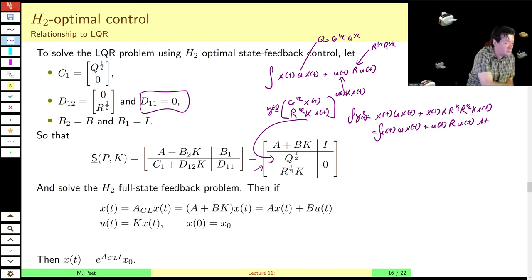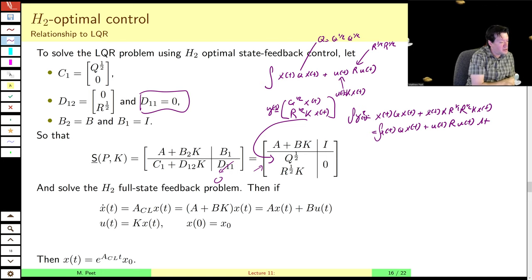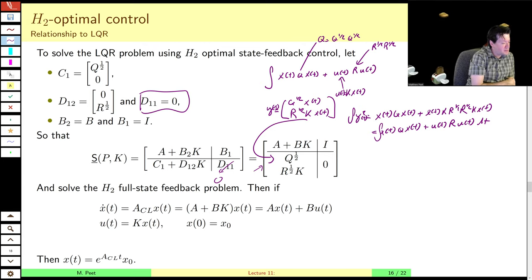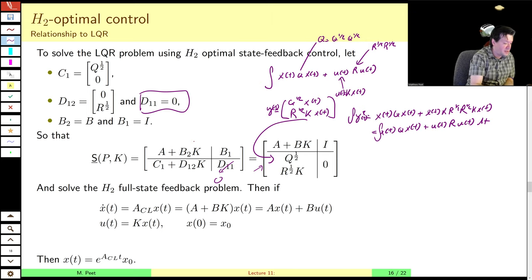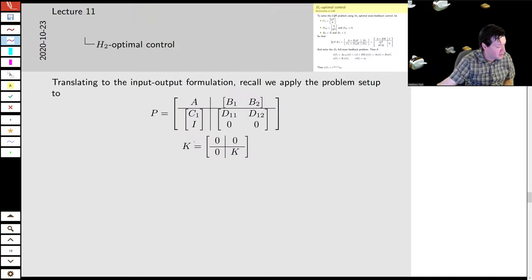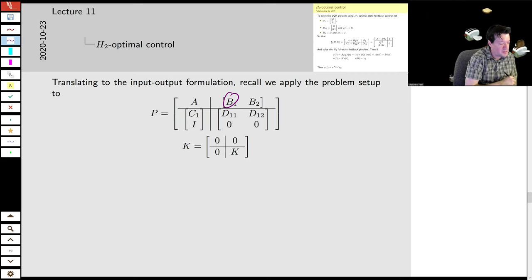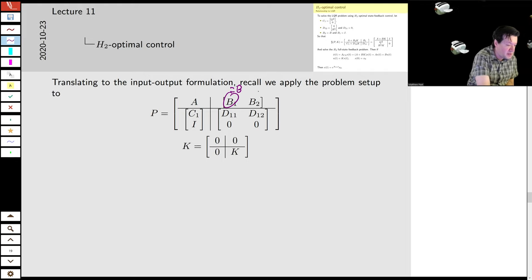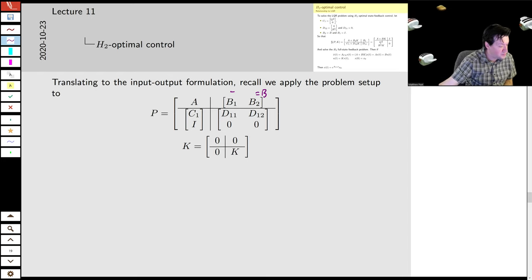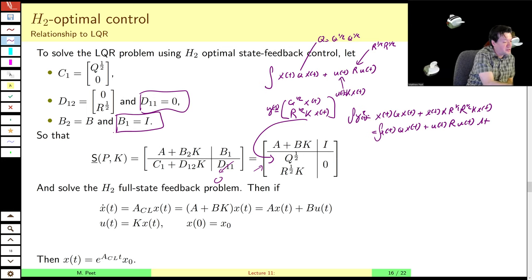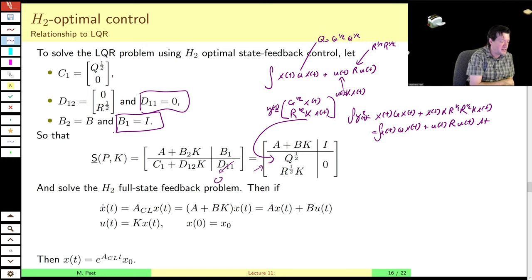D11 is zero, so that goes to zero. B2 is obviously B, because that's how the input affects the dynamics. The non-obvious choice is setting B1 equal to identity — even though there's no actual exogenous input. Let's just do it and see what happens: solve the H2 optimal control problem with the exogenous input weight set to identity, and see if that translates to a solution to the LQR problem.